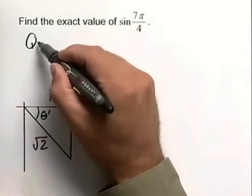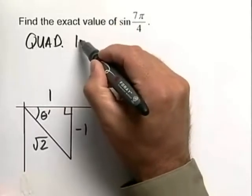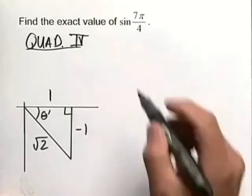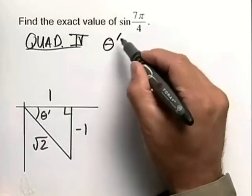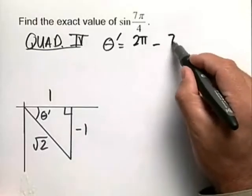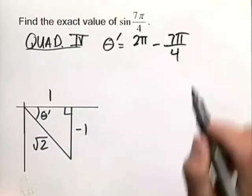For this problem we're in quadrant 4, and because we're in quadrant 4, we have to use our formula for the reference angle. For our purposes, theta prime, our reference angle, is going to be equal to 2π minus 7π/4.